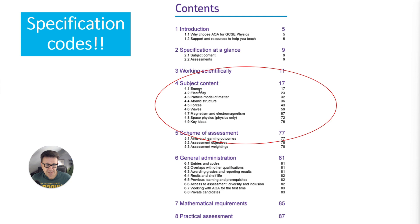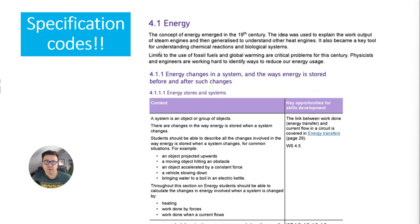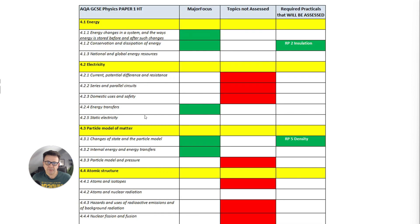Here's the subject content — all the physics items — and you can see they've given each one a number. That number is the spec code. For example, 4.1 is energy, and then you've got subunit 4.1.1, and then other subunits within energy changes and so forth.